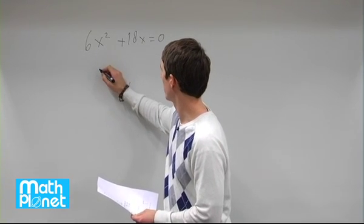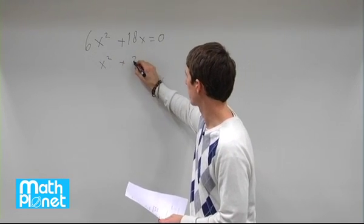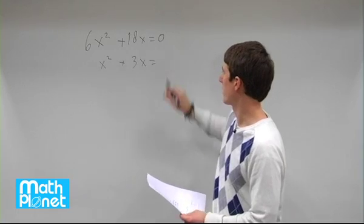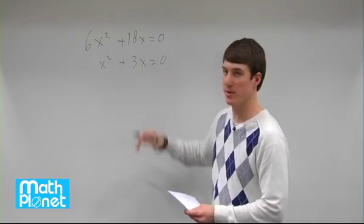If we do that, then we get x squared plus 18 divided by 6 is just 3x. And then 0 divided by 6 is still 0. Great. So it's a little bit simplified.